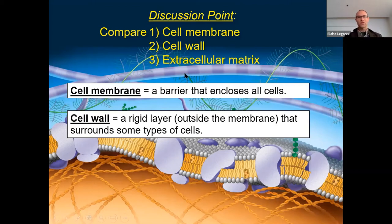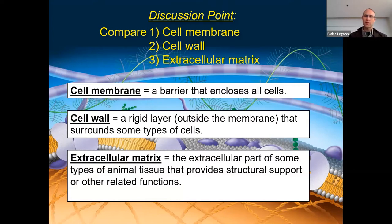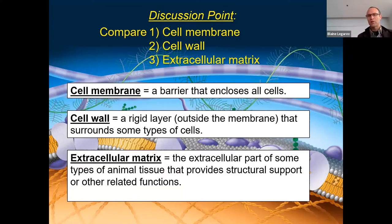The last one is the extracellular matrix. The extracellular matrix is found outside of some animal cells. It's in some ways analogous to a cell wall — sometimes it can be rigid and firm, but sometimes it's kind of floppy, like connective tissues. There's actually a variety of functions, and we'll talk about the extracellular matrix in a few minutes, but let's talk about cell walls first.